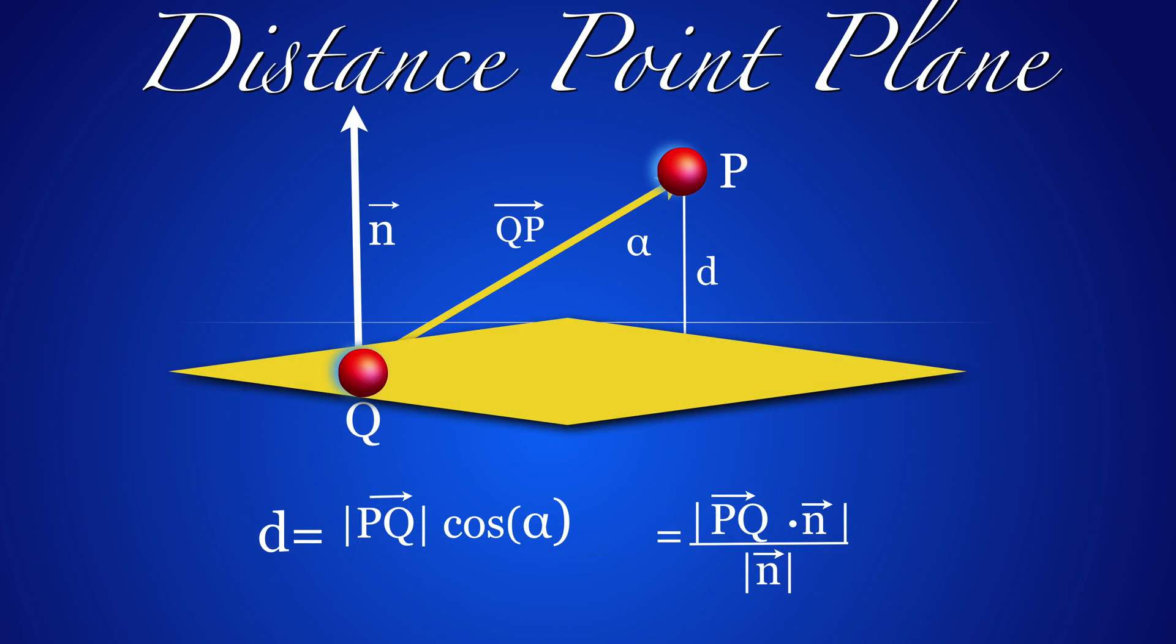The distance between a point and a plane can be seen again using the definition of trigonometry. Again, we can multiply and divide by the length of N to get the formula without trigonometry. And it's the dot product of PQ and N divided by the length of N.